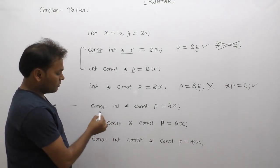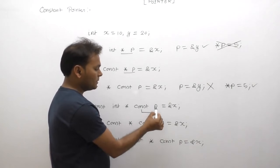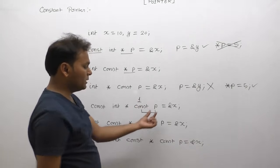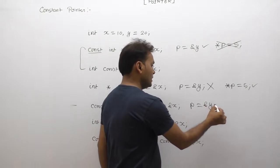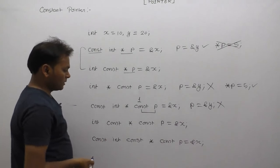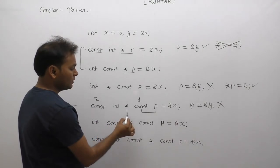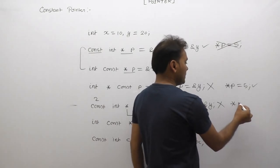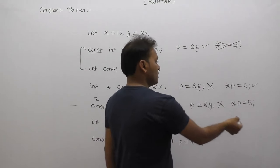In the next case, we are providing two const declarations. Reading right to left, the first const applies to p — so p equals address of y is an invalid operation, p cannot be changed. The second const applies to star p — therefore we cannot change star p either. Both operations are invalid.